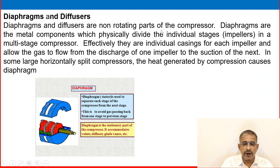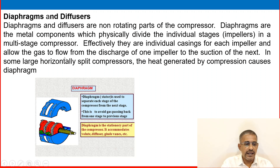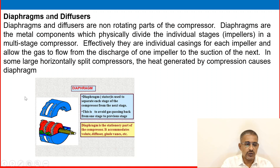Diaphragm and diffusers are non-rotating parts of the compressor. Diaphragms are metal components that physically divide the individual stages — effectively individual casings for each impeller — and allow gas to flow from the discharge of one impeller to the suction of the next. In some large horizontally split compressors, the heat generated by compression can cause the diaphragm to distort.